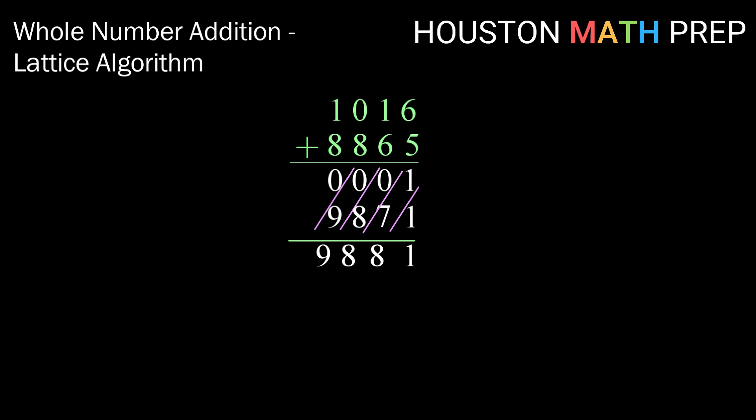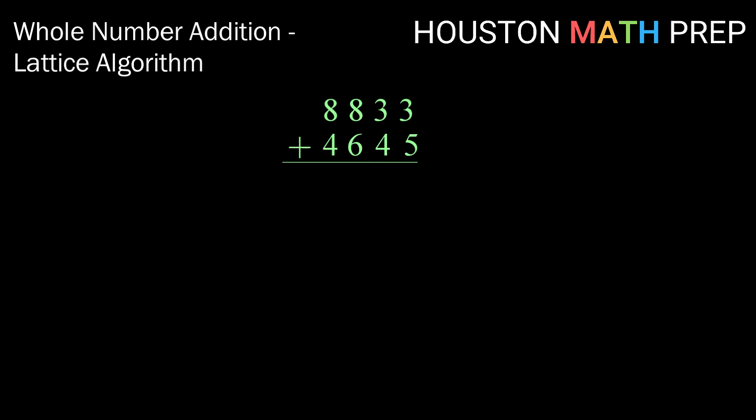Okay, let's look at one more. This time, we're going to see what happens if you don't just get a 0 in that top diagonal. Here we go. 3 plus 5 is 8, so we're going to write that vertically as 0, 8. 3 plus 4 is 7, we're going to write that as 0, 7. 8 plus 6 is 14, so we're going to have 1, 4 written vertically. And 8 plus 4 is 12, so we're going to have 1, 2 written vertically.